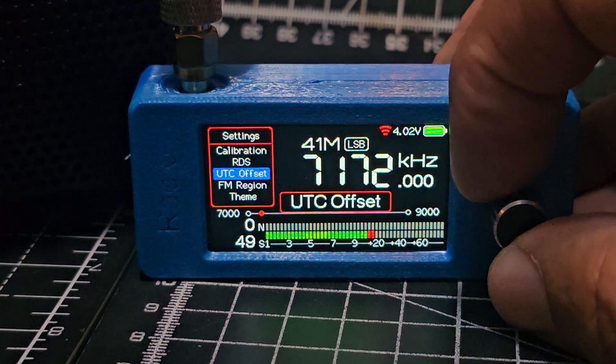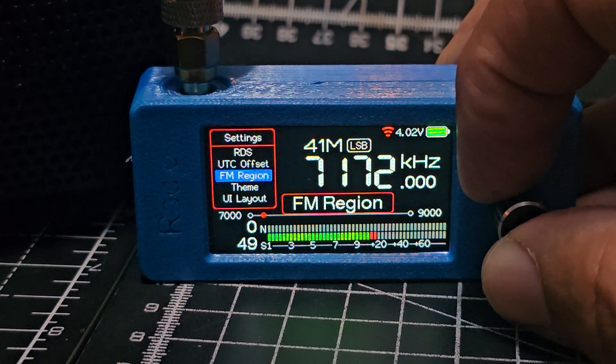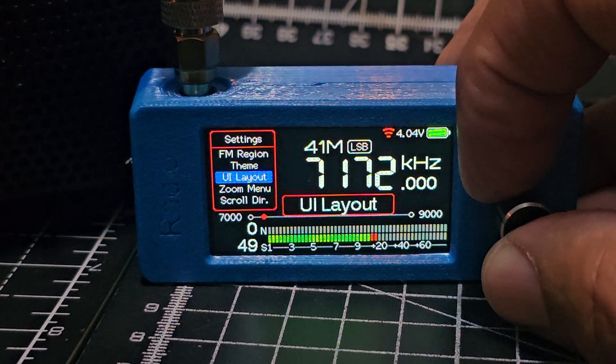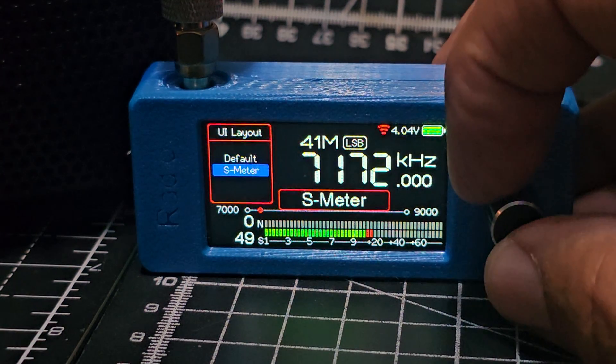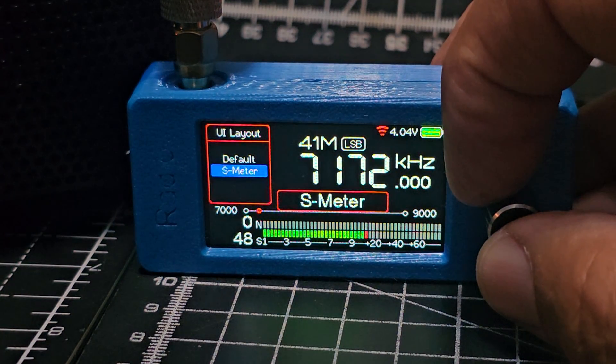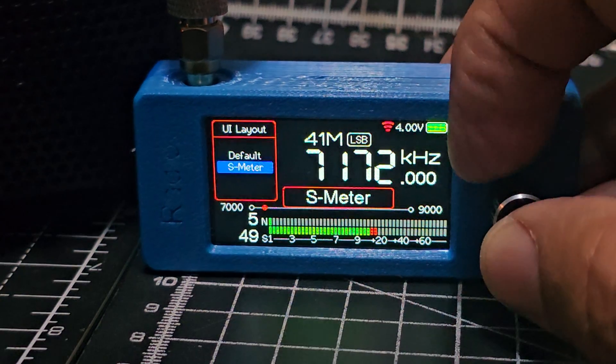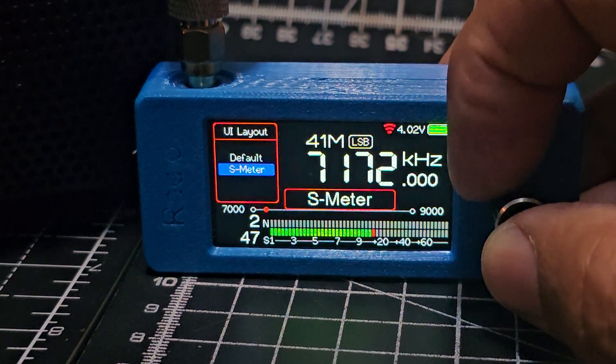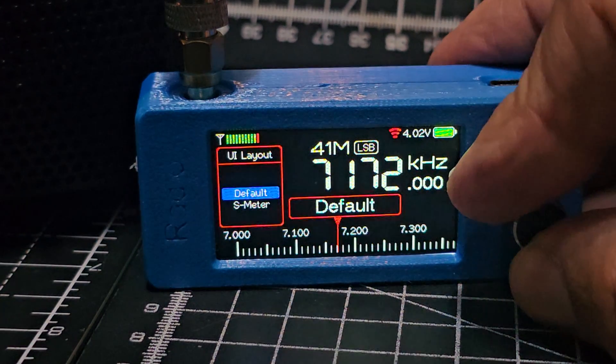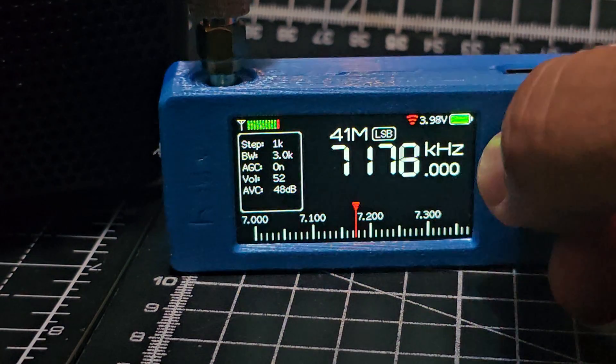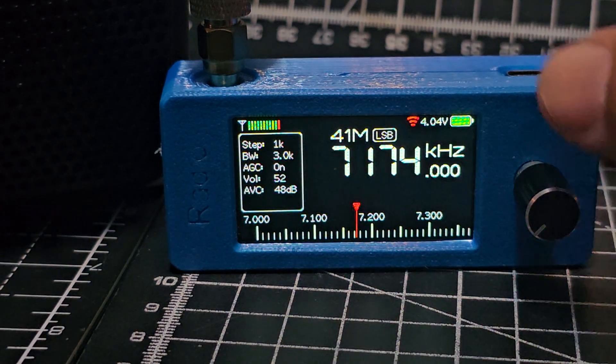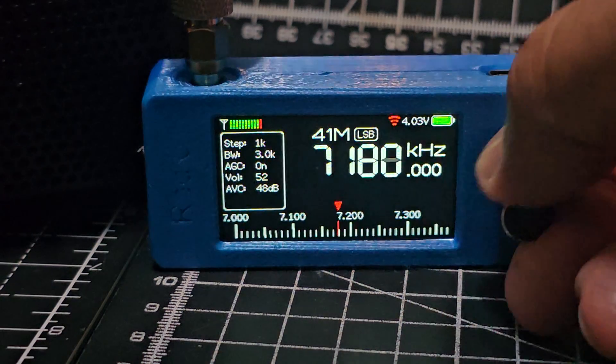UTC, FM region, theme. We saw that's the color changing. Ah there it is, it's called UI, is that layout? My eyesight is so bad. Layout, go to default. And look when you come out and you scroll forward and back the little red arrow moves forward and back.